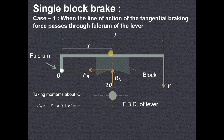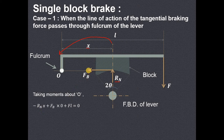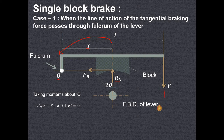Starting with Rn — this Rn will produce an anticlockwise moment about point O, so it is negative. The force is Rn and the perpendicular distance is X, so Rn times X is the anticlockwise or negative moment. The point of application of FB is already passing through O, so it will not have any moment about O because the perpendicular distance is zero — it is FB times zero. Then this force F will produce a clockwise moment about O, and the perpendicular distance from F to point O is L, so F times L is the clockwise moment.